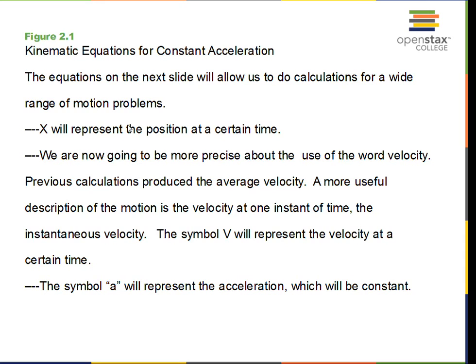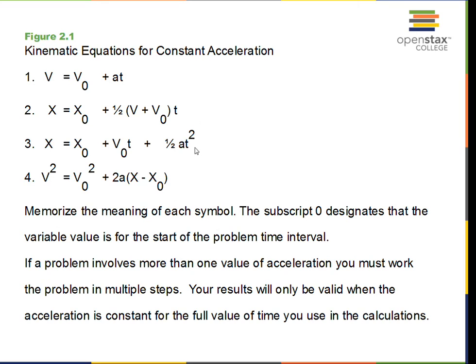In the kinematic equations you need to know what the variables stand for. So x is going to be a position. I'm going to stop talking about average velocity. Now we're going to use instantaneous velocity, the velocity at a particular time, the velocity at one instant of time. Our symbol V will represent this velocity, and the symbol A will represent acceleration. So x for position, V for the velocity at a particular time, and A for acceleration. And the acceleration will be constant.